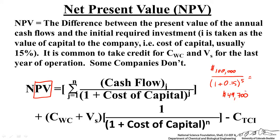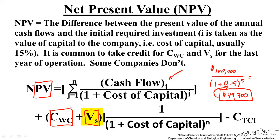Another way to look at this: if we took $49,700 today and invested it at 15%, in five years it would be $100,000. We do that calculation for each year we're going to be earning cash flow. At the end of the project — say 10 years from now — we salvage our equipment and can pass on working capital like raw materials to get credit, then subtract what we actually put into the investment at time zero.